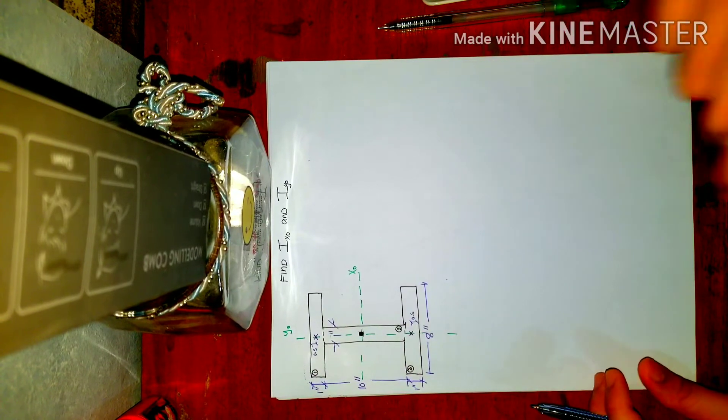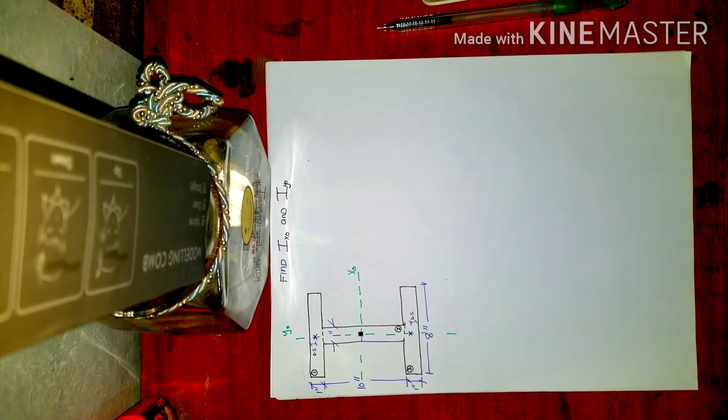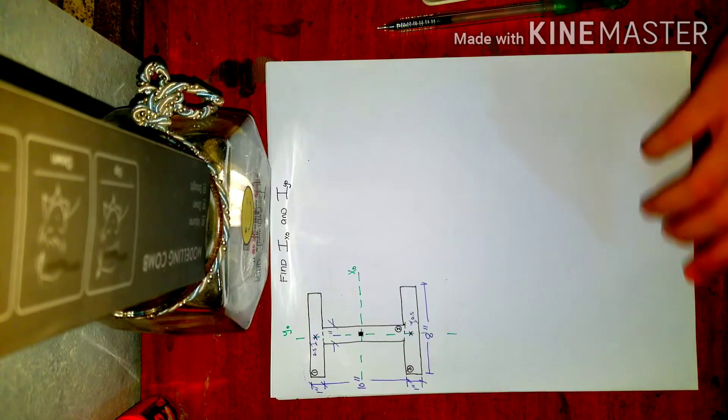So they're equidistant. So later on, what I can do is multiply by 2, since they have the same distance and dimensions.